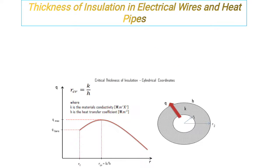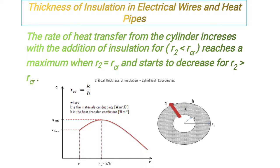The critical radius RCR equals K upon H, where K is material conductivity in Watt per meter per Kelvin and H is the heat transfer coefficient in Watt per meter square. The rate of heat transfer from the cylinder increases with the addition of insulation for R2. R2, the outer radius, is less than critical radius RCR, reaches a maximum when R2 equals RCR, and starts to decrease for R2 greater than RCR. Here R1 is the internal radius and R2 is the external radius.